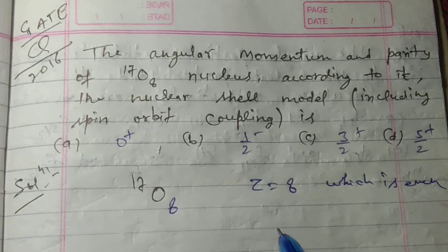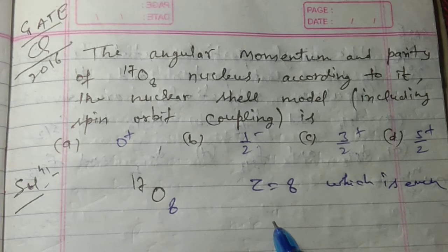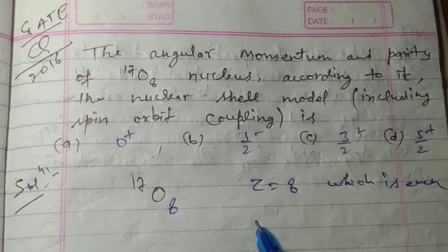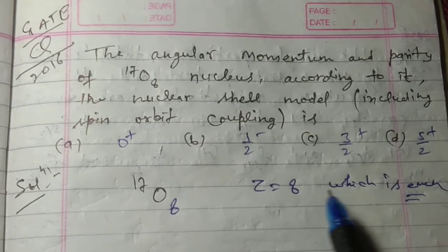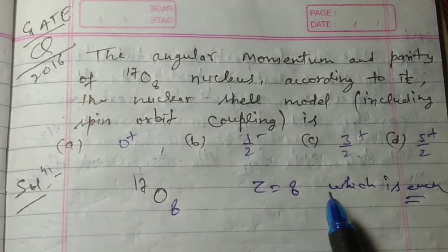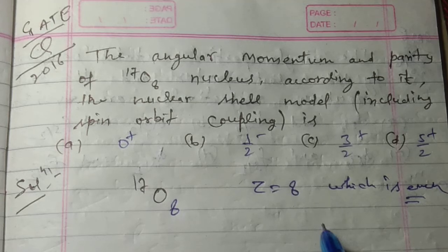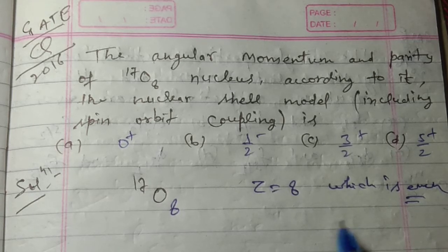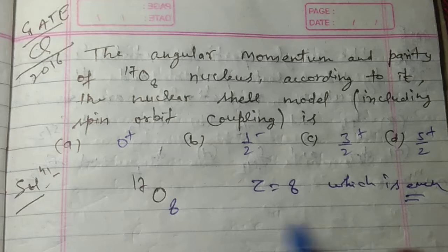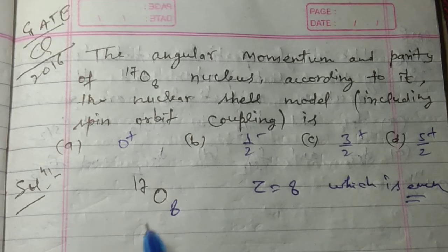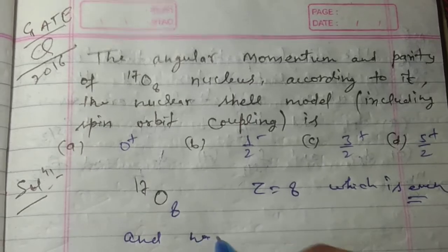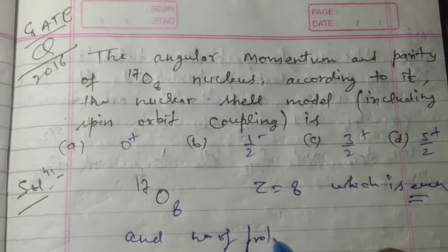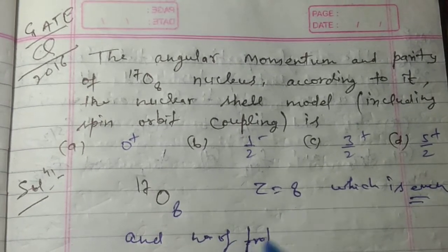Since this is even, it cannot contribute to the angular momentum. We have already discussed that for even numbers the angular momentum is cancelled out in the previous video. If you have not seen that video, first watch that video. The number of neutrons is equal to 9, which is odd, so this neutron will give the contribution.